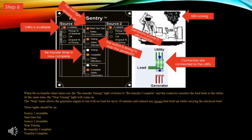Step six: when the retransfer timer times out, the retransfer timing light will switch to retransfer complete and the contactor transfers the load back to the utility. At the same time, the stop timing light will come on. The stop timer allows the generator engine to run with no load for up to 10 minutes and exhaust any excess heat that has built up while carrying the electrical load. Utility available is on, the start light remains on, the generator is still running, the retransfer timer is now complete, the switch is timing to stop, and the contactors are connected to the utility — shown in green.